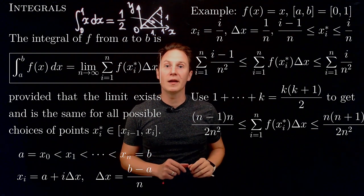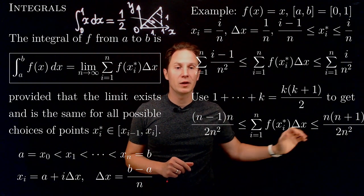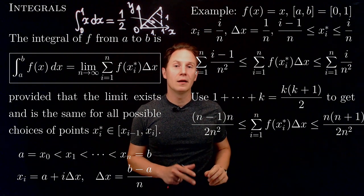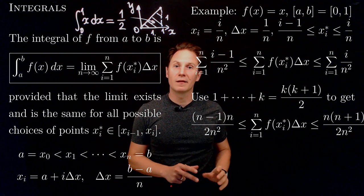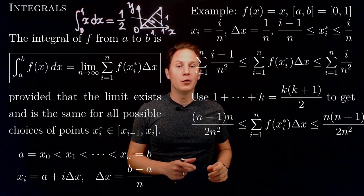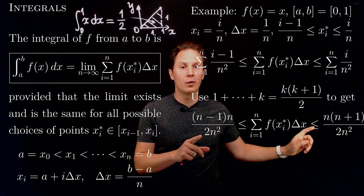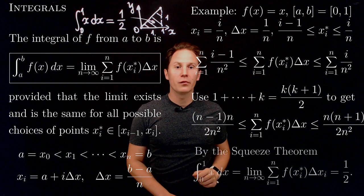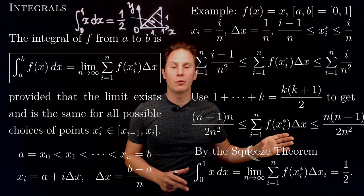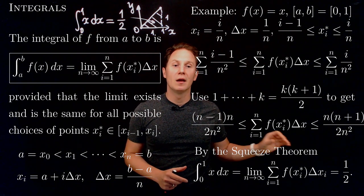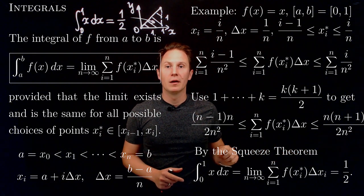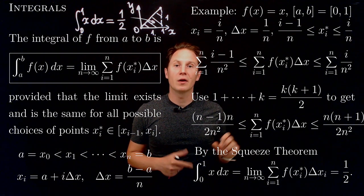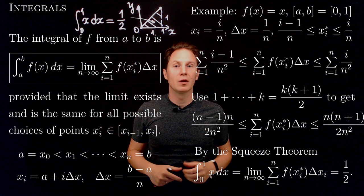For the lower bound we obtain (n−1)n over 2n², and for the upper bound we get n(n+1) over 2n². This is valid for all n and regardless of the choice of sample points. Now letting n go to infinity, both the lower and upper bounds have the same limit — one half. Therefore by the squeeze theorem, the nth Riemann sum in the middle also has the same limit: one half. Thus we conclude that the definite integral from 0 to 1 of x dx equals one half, matching our expectation based on areas.